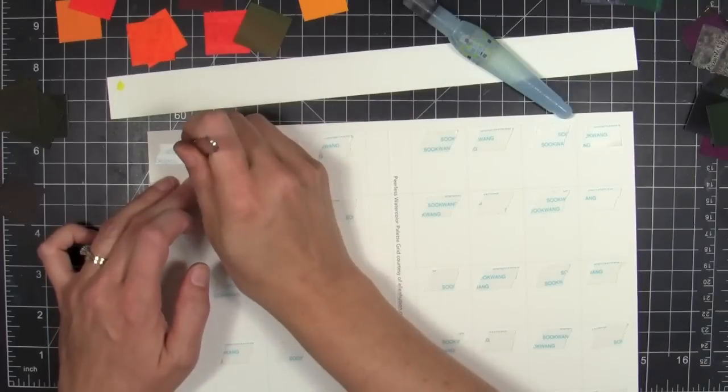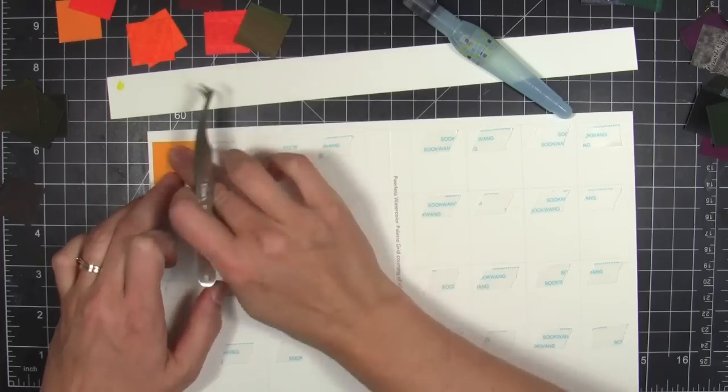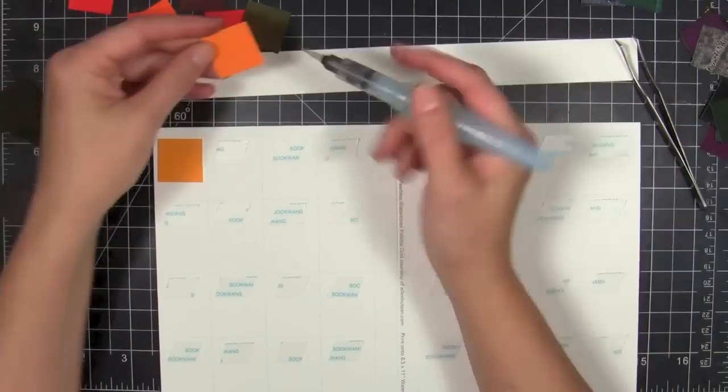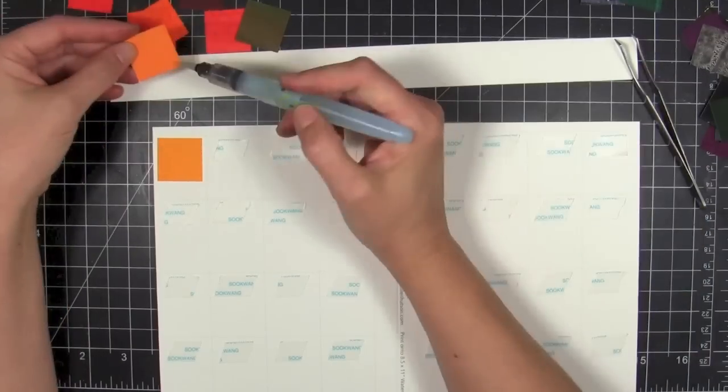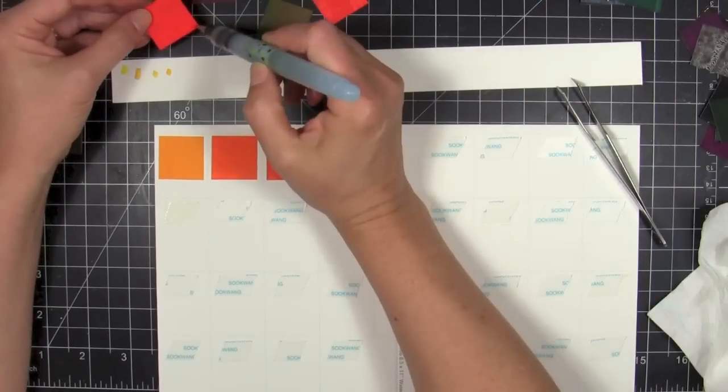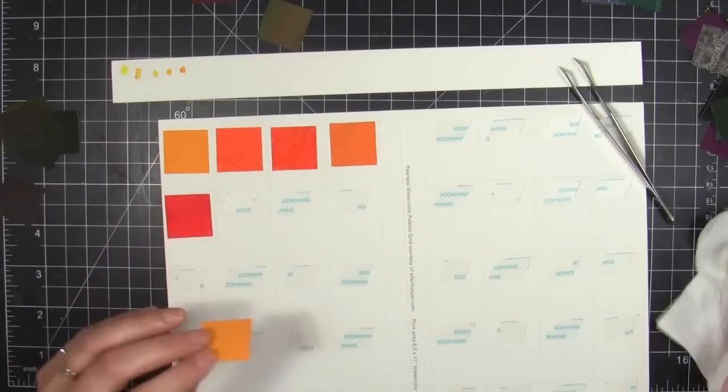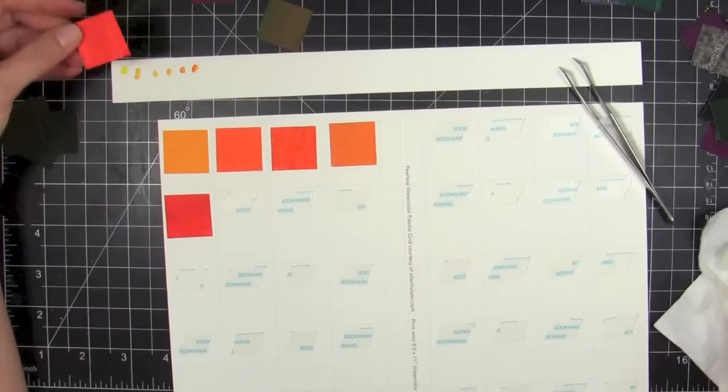So I took my water brush and I just tested them on some scrap watercolor paper very quickly as I started mounting them. I'm not using a lot of paint here, but it's a good idea to test them and just make sure that you're getting them arranged in the color range that you want. I'm kind of going in a rainbow here—I started with yellow and I went to orange and red and purple and then blue.